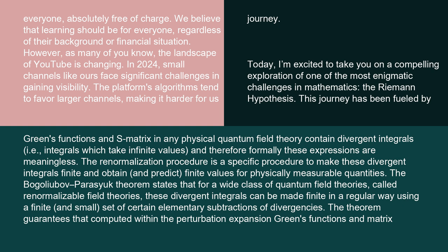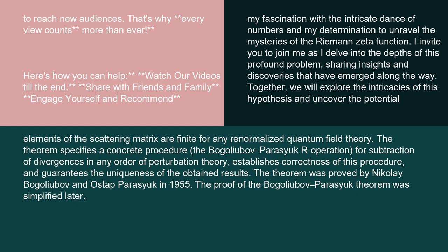The theorem guarantees that computed within the perturbation expansion, Green's functions and matrix elements of the scattering matrix are finite for any renormalized quantum field theory. The theorem specifies a concrete procedure — the Bogoliubov-Parasiuk R-operation — for subtraction of divergences in any order of perturbation theory, establishes the correctness of this procedure, and guarantees the uniqueness of the obtained results.